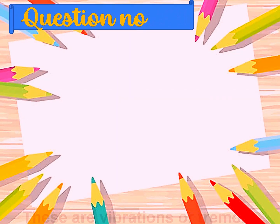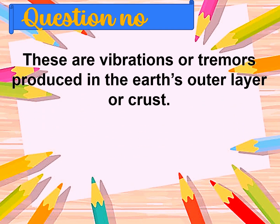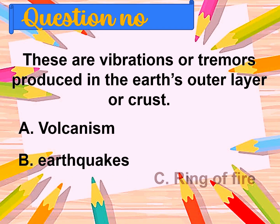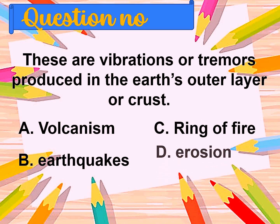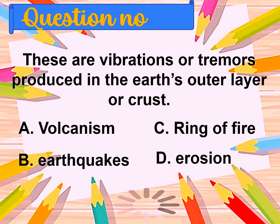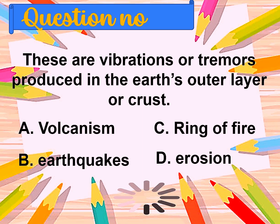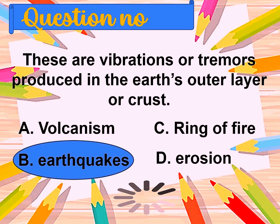Question number twenty-six: These are vibrations or tremors produced in the Earth's outer layer or crust. A. Volcanism, B. Earthquakes, C. Ring of Fire, D. Erosion. The correct answer is earthquakes.